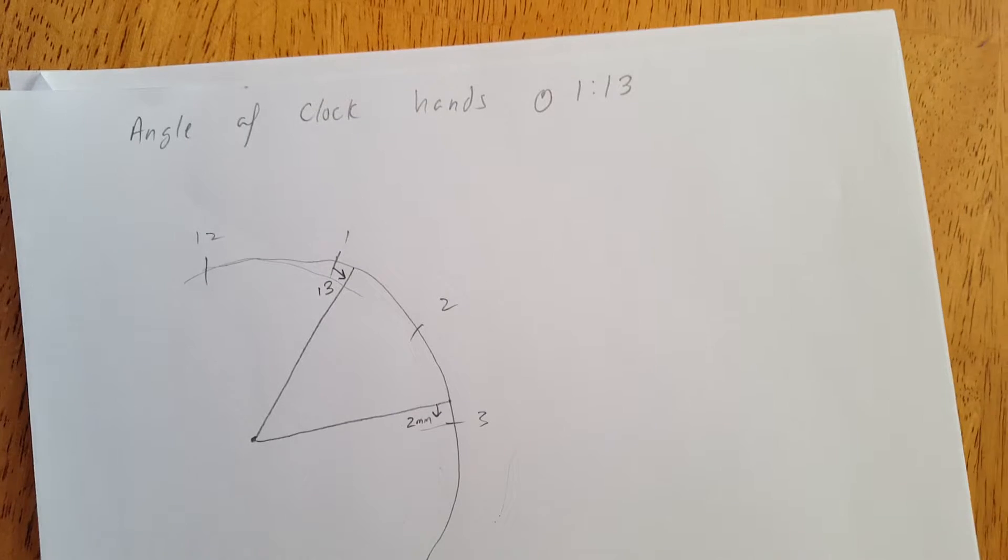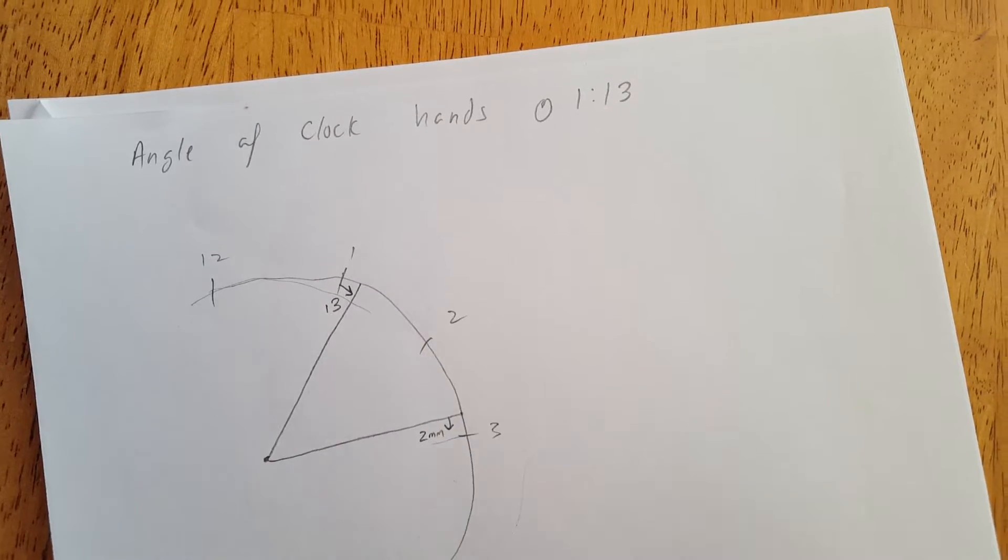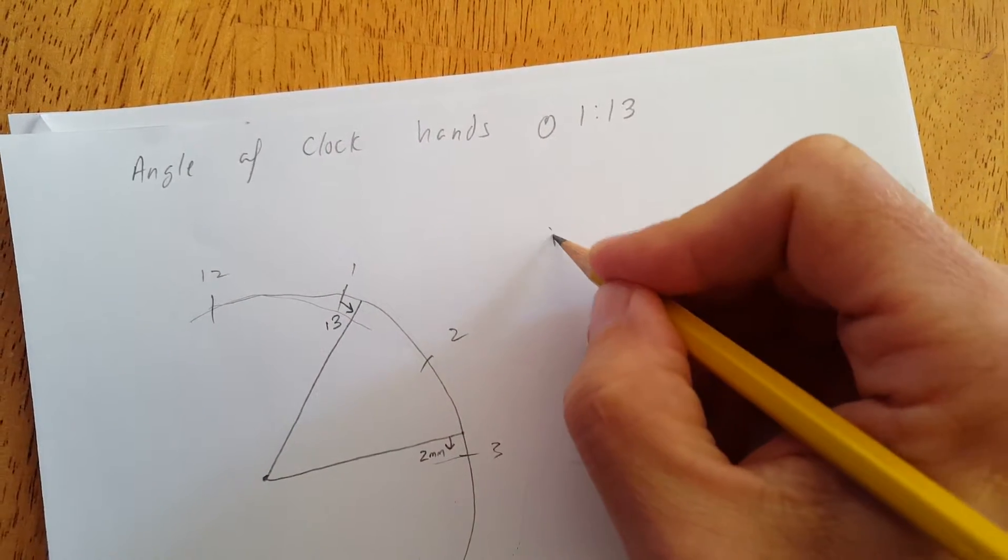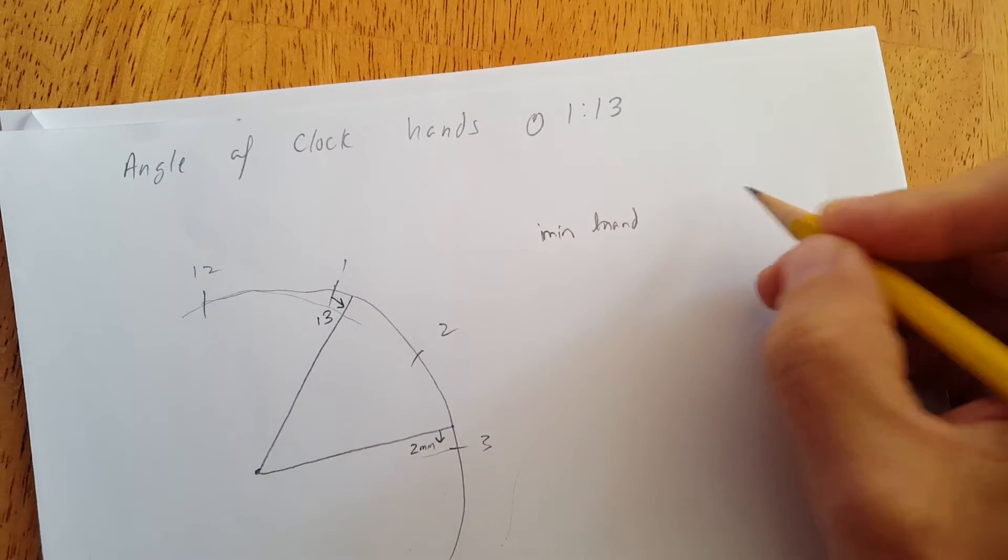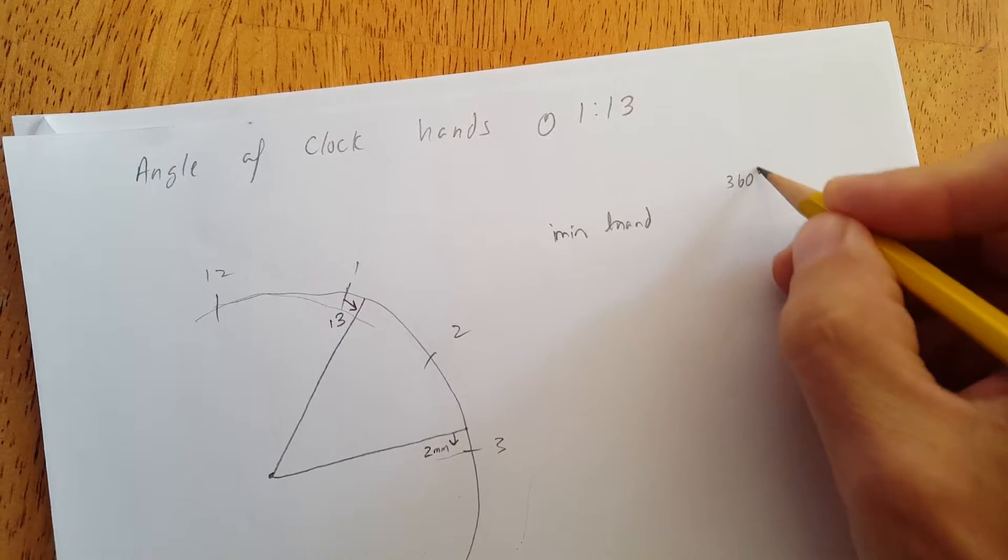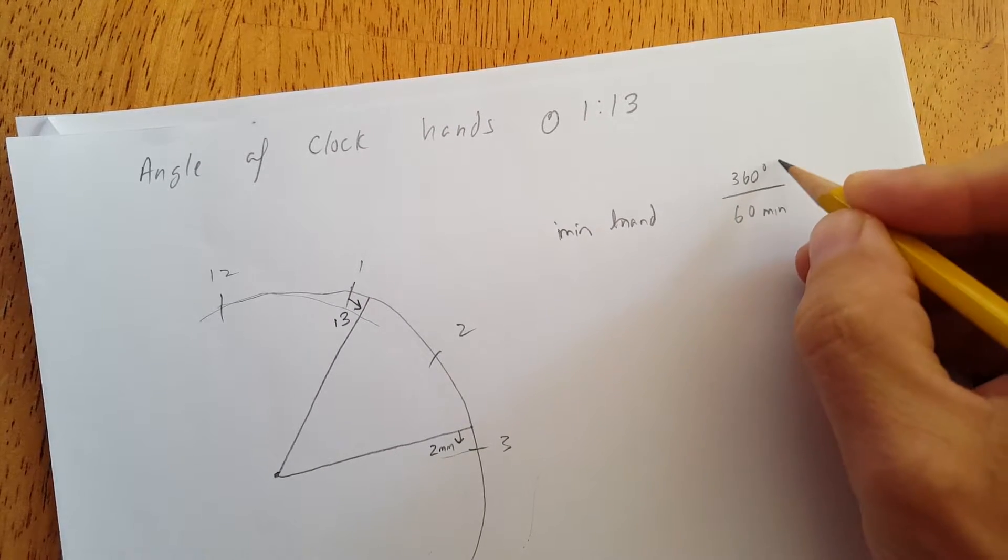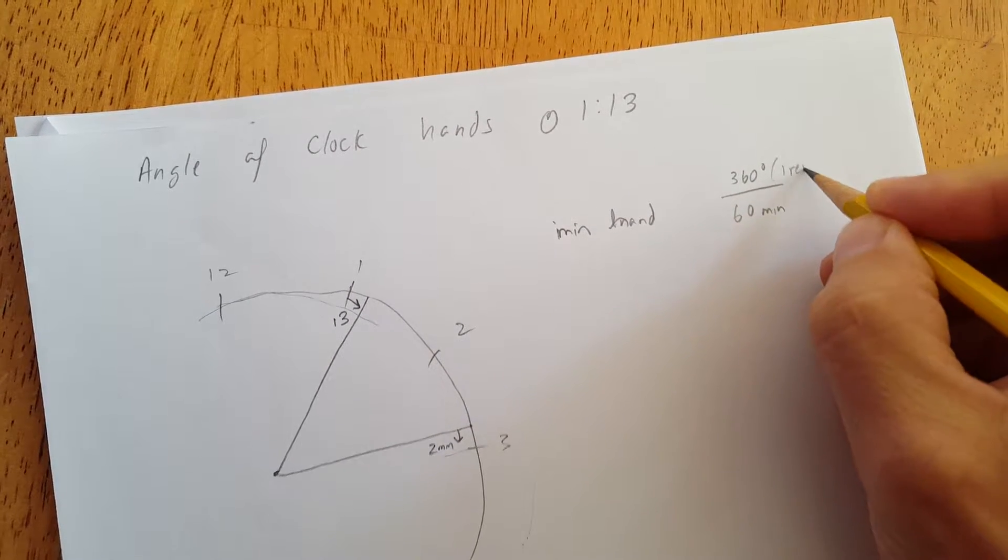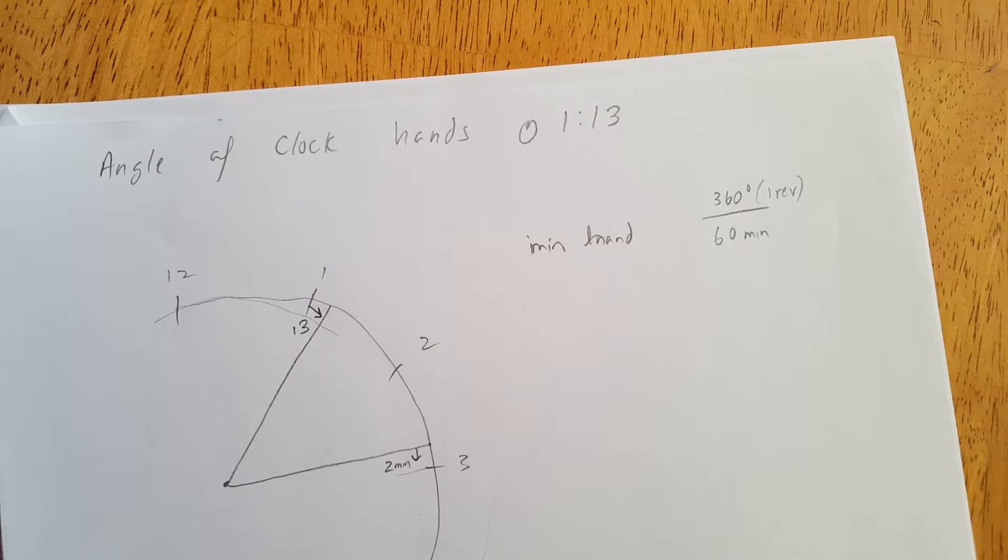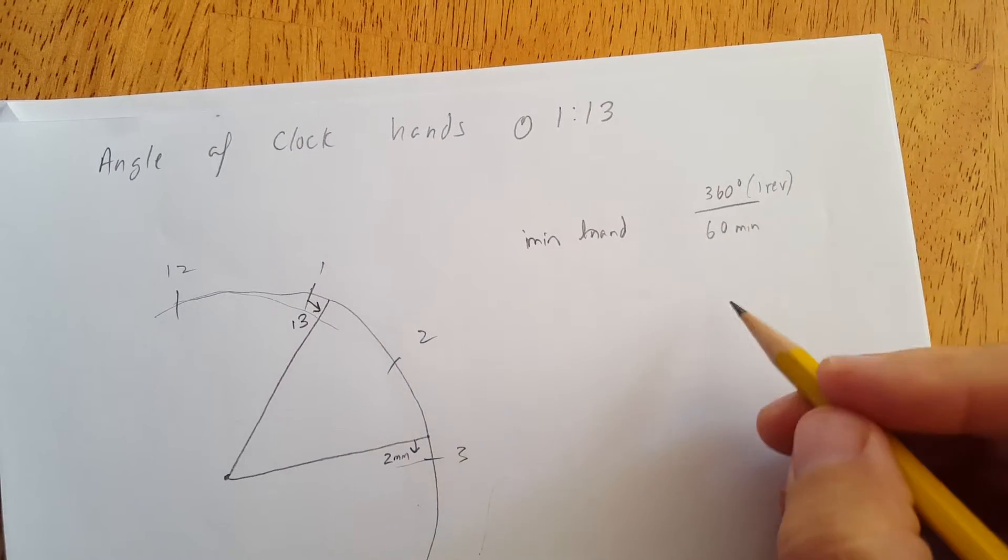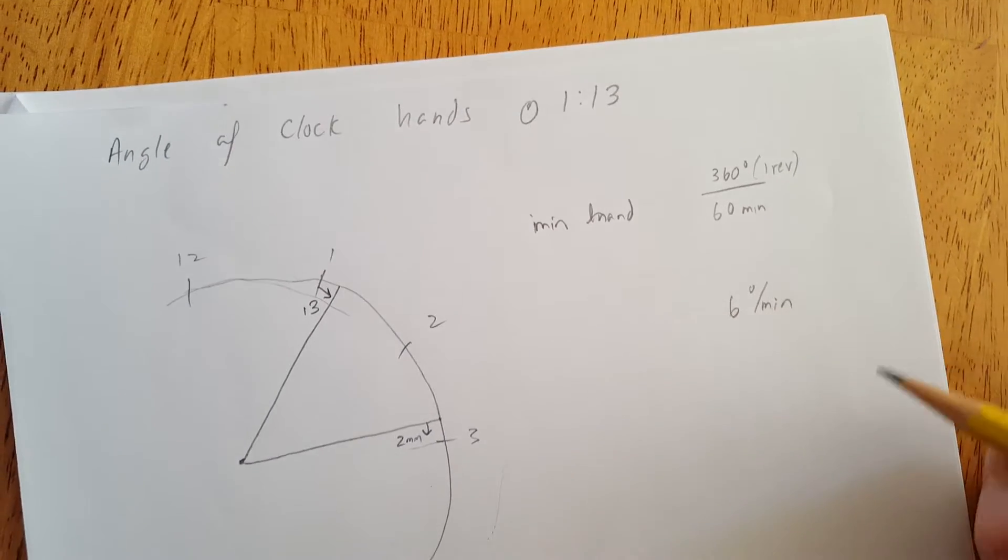Okay now the next step is to determine how many degrees will a hand move for each minute and that's going to be different for each clock hand. So the minute hand, 360 degrees for 60 minutes. So this is one revolution. The minute hand has to go all the way around for 60 minutes, right? So from that ratio we get 360 divided by 60 is 6.